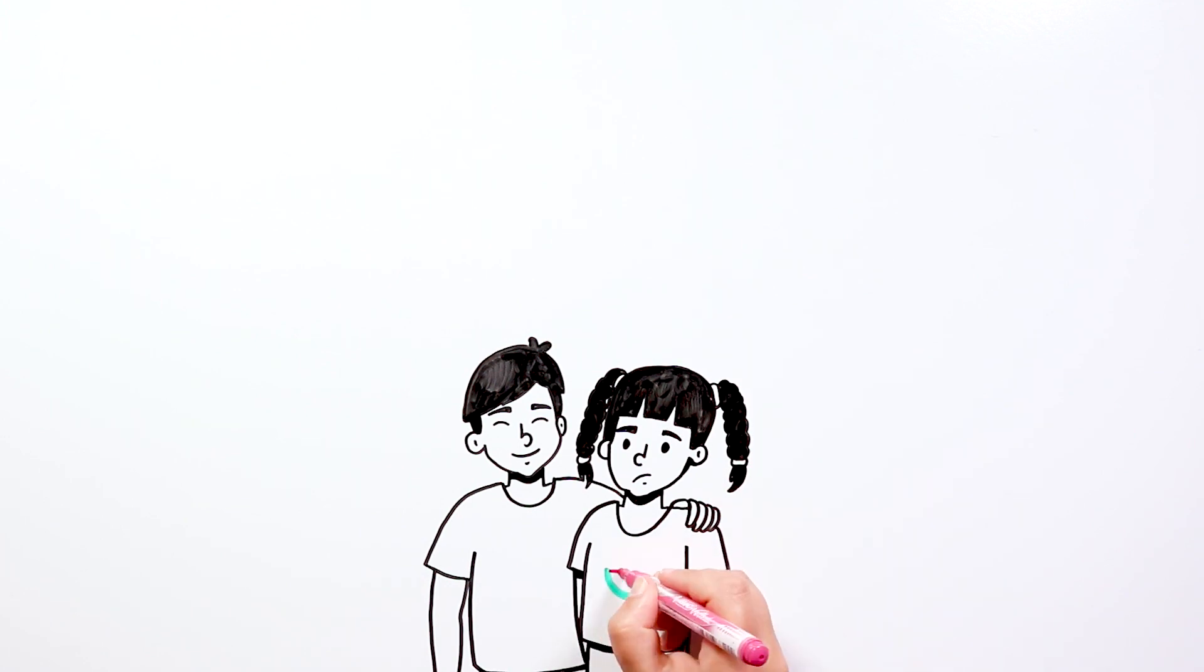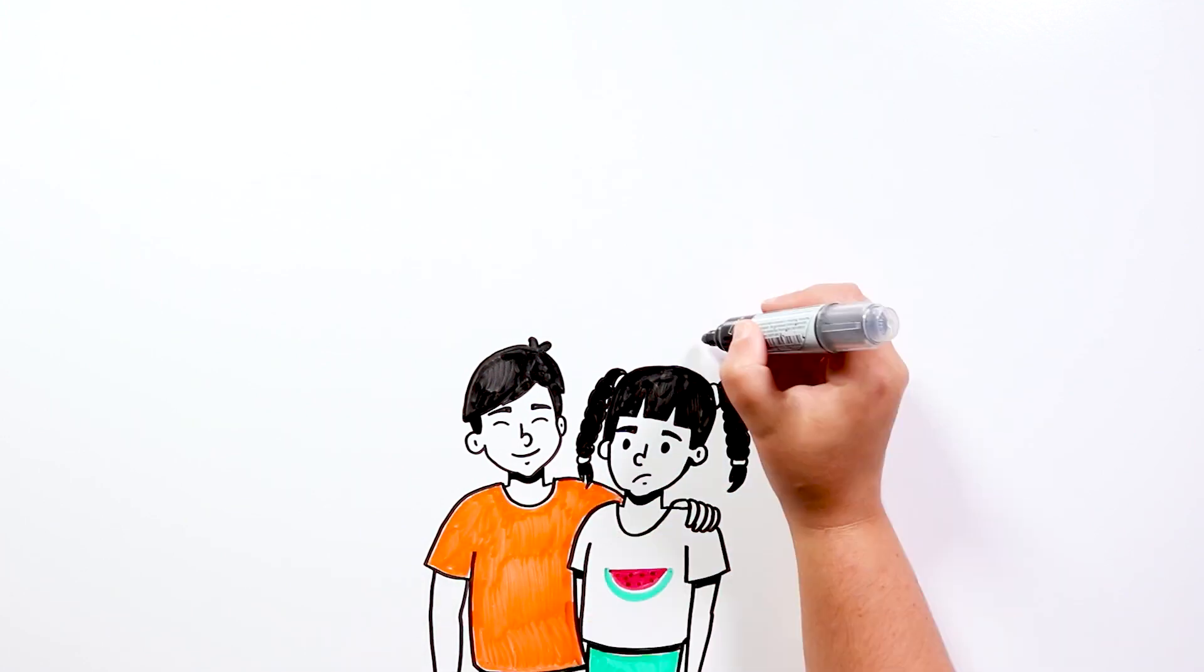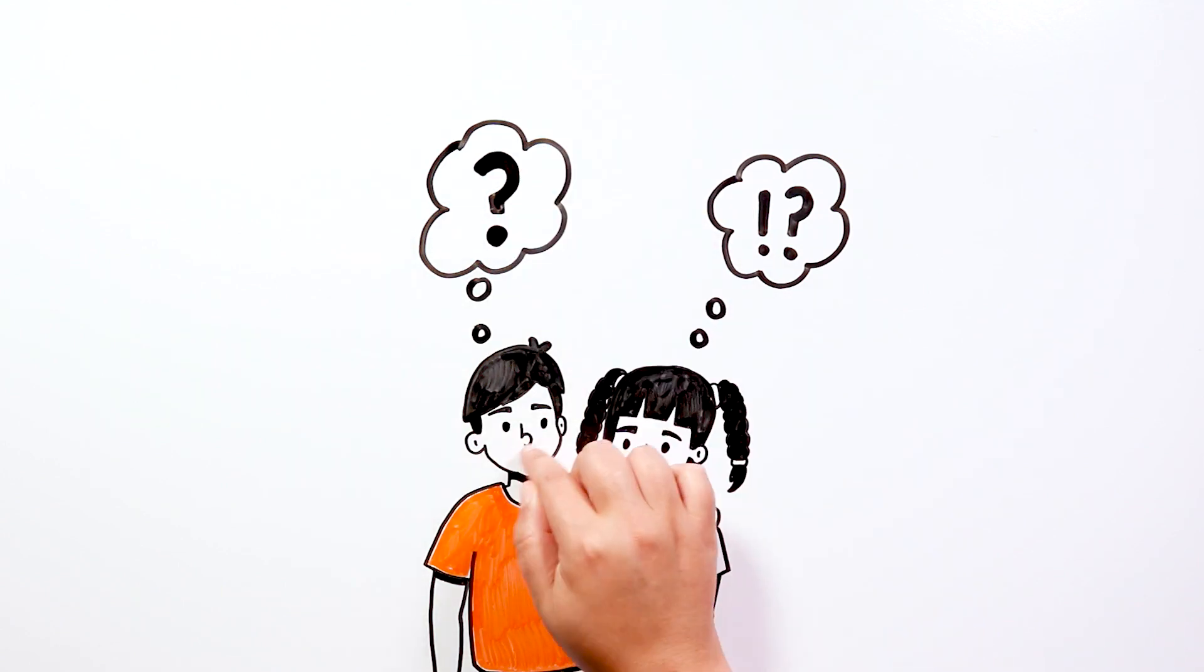The siblings, aged 12 and 14, felt old enough to be left alone, giving them the impression that their parents were giving them a babysitter.